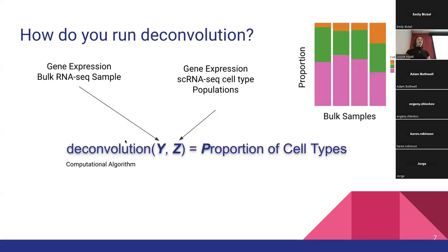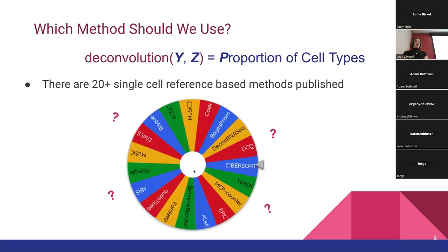So how do we run deconvolution? The three pieces of the puzzle you need are your bulk RNA-seq gene expression samples, a single cell reference dataset — hopefully from the same region as close a match as possible — and then a deconvolution method. Which method should you choose? There are over 20 single-cell reference-based deconvolution methods out there. Some are more popular than others. You might have heard of CyberSort, DISC, MuSiC, or DWLS, but there's a lot of different methods to choose from.